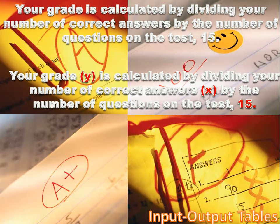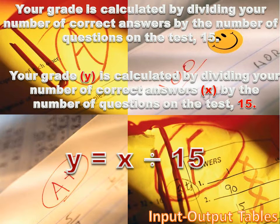I hope you see the input-output relationship here. We're going to input a value, which is the number that we got correct, or X, into the function, and the output value will be Y. Our function will look like this: Y equals X divided by 15.